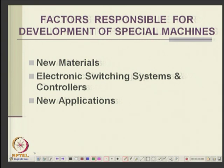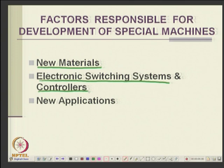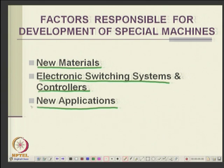Now, why have special machines come about? Three major factors are responsible. First, the development of new materials — research in material science has created new materials. Second, switching systems — developments in power electronics, power modules, software, microcontrollers, and DSPs allow elegant switching of devices. Third, the need for new applications. These three factors have led to the development of new and special machines.